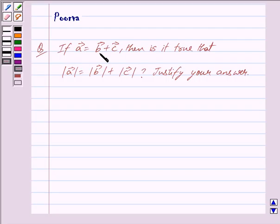If vector A is equal to vector B plus vector C, then is it true that mod of vector A is equal to mod of vector B plus mod of vector C? Justify your answer.